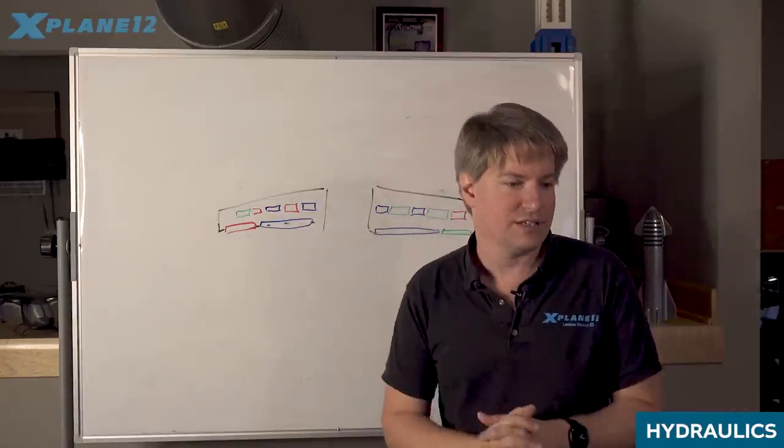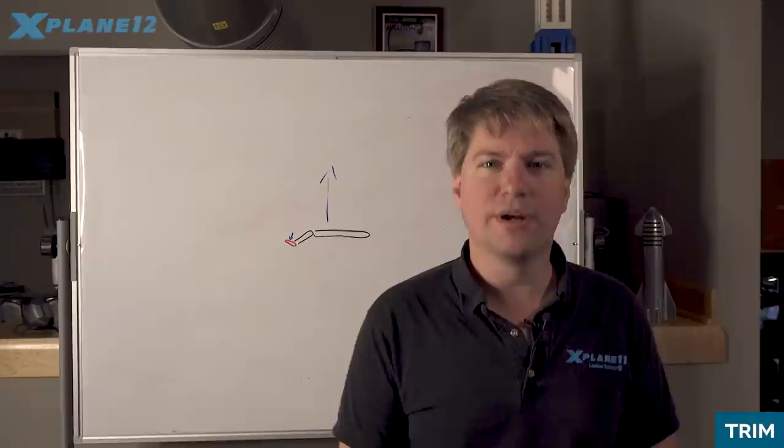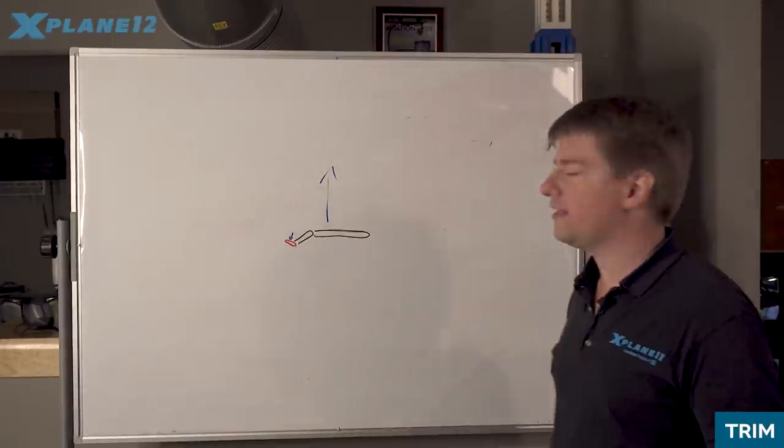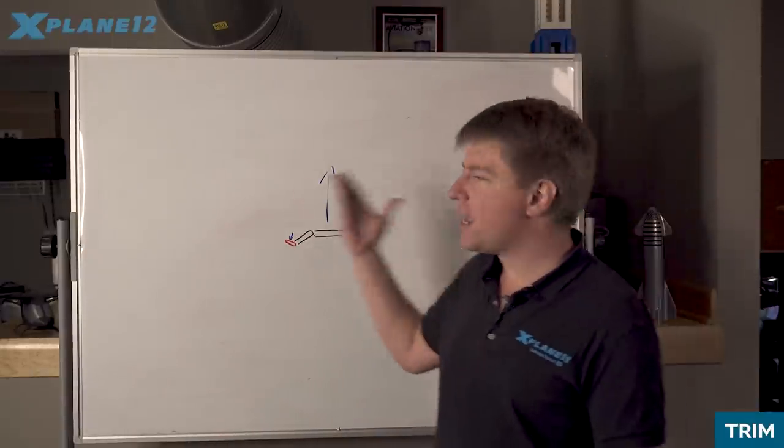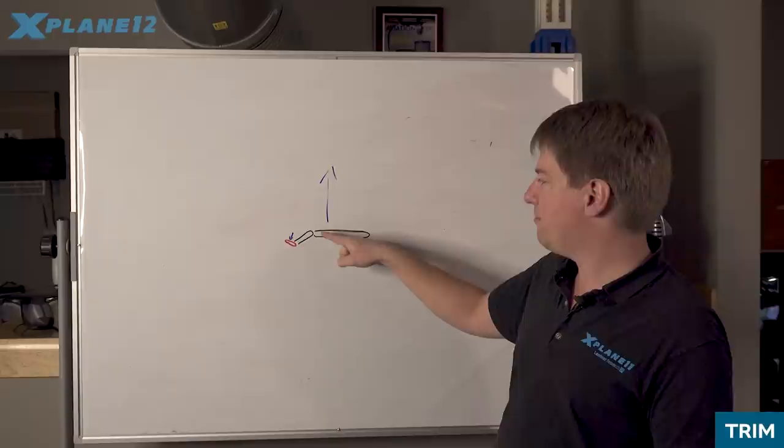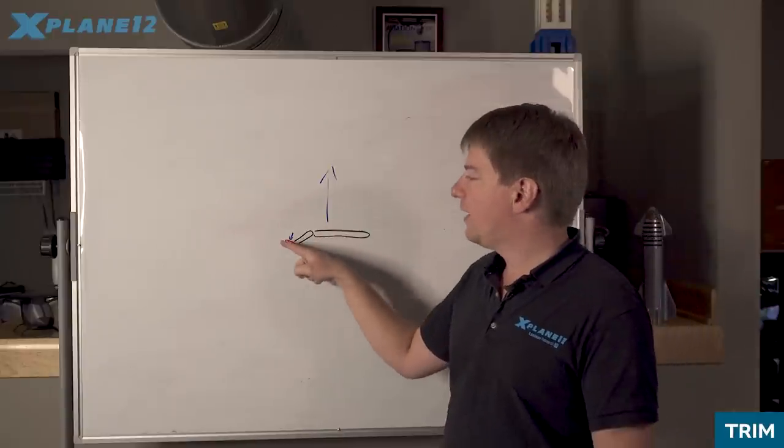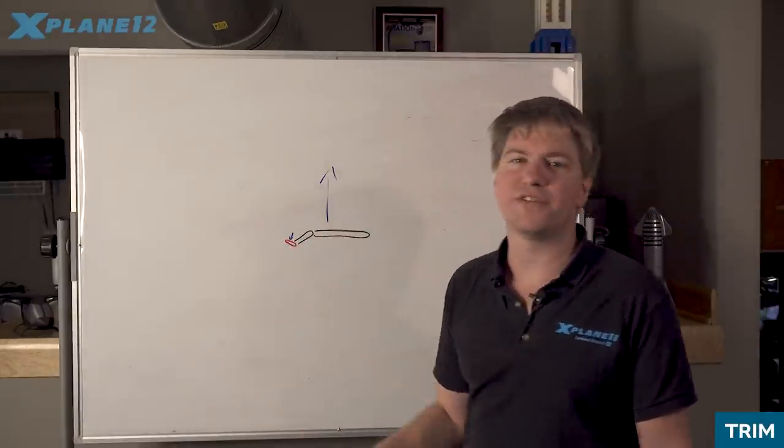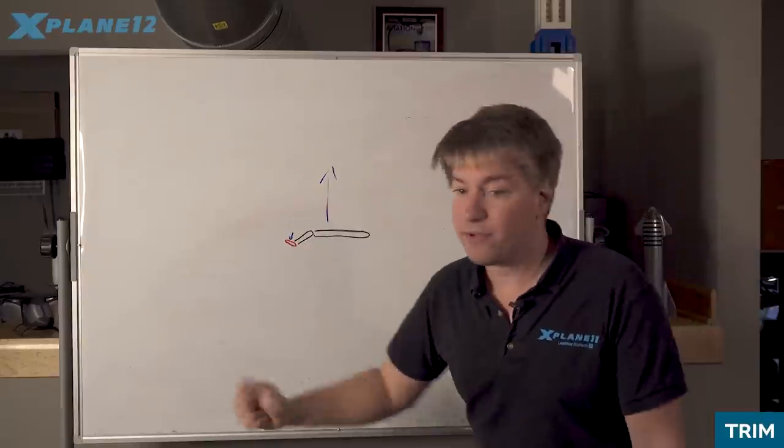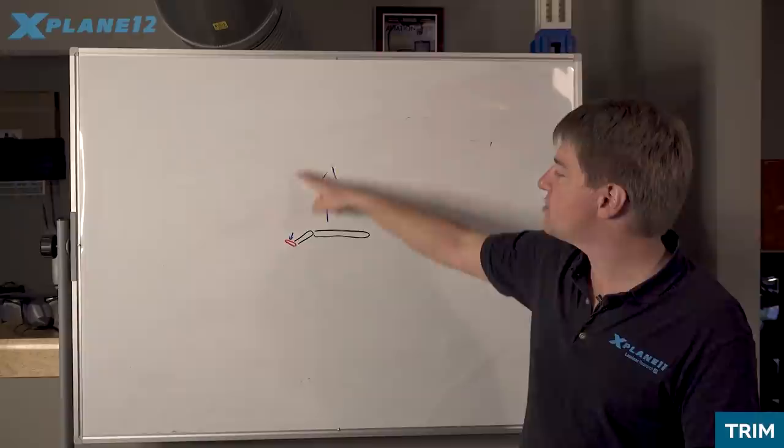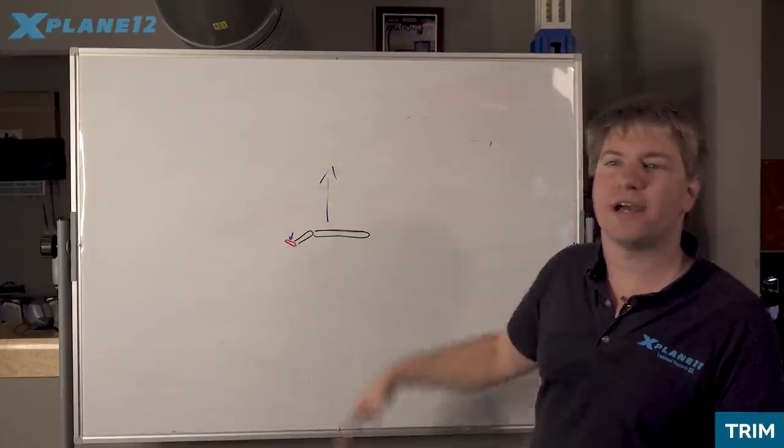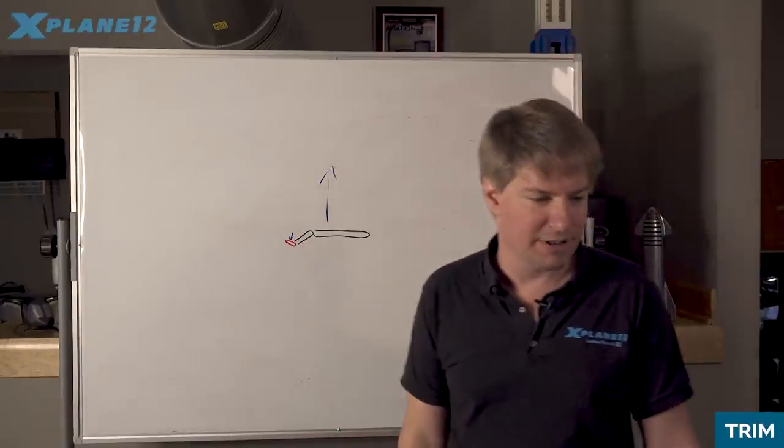X-Plane 12 distinguishes trim between aerodynamic tabs and just pre-loading the flight controls. So if you take the tail of a 172 for example, you will have the stabilizer, the elevator, and then you will have a little trim surface at the end of the elevator which you set with your trim wheel, and then that little surface displaces the elevator to give you the desired up or down force on the stabilizer that you want.